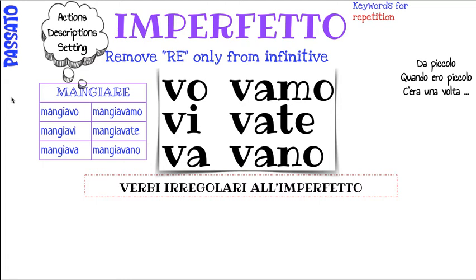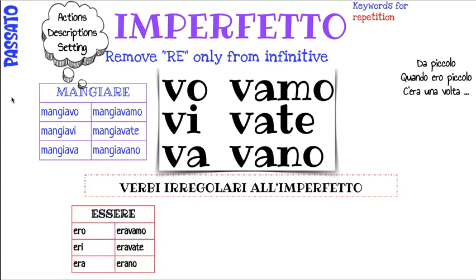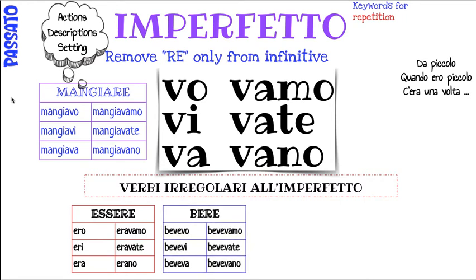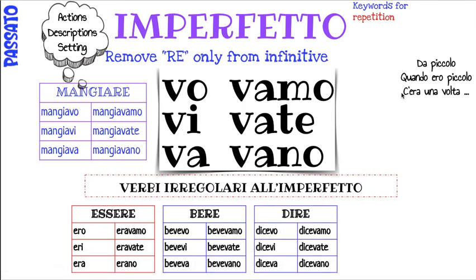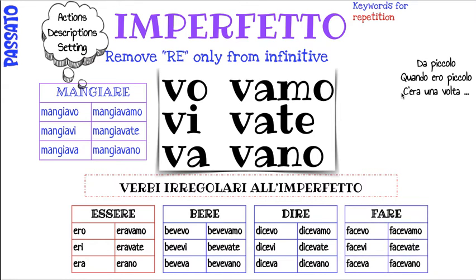The cool thing about this tense is that there are only four main irregular verbs. The crazy one is the verb to be. But if you remember the present tense, this one's not too off anyway. Dire, to say: dicevo, dicevi, diceva, dicevamo, dicevate, dicevano. Poi fare? Facevo, facevi, faceva, facevamo, facevate, facevano. The present tense is faccio, so facevo — it's not too far off.